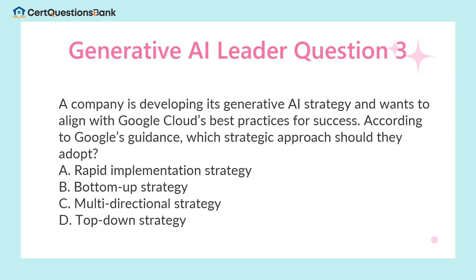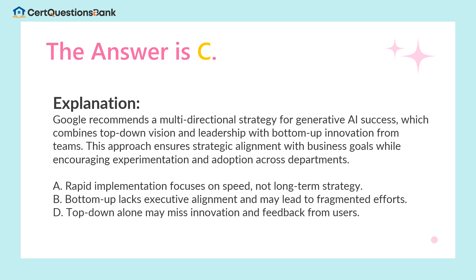A company is developing its generative AI strategy and wants to align with Google Cloud's best practices for success. According to Google's guidance, which strategic approach should they adopt? A. Rapid implementation strategy. B. Bottom-up strategy. C. Multidirectional strategy. D. Top-down strategy. The answer is C.